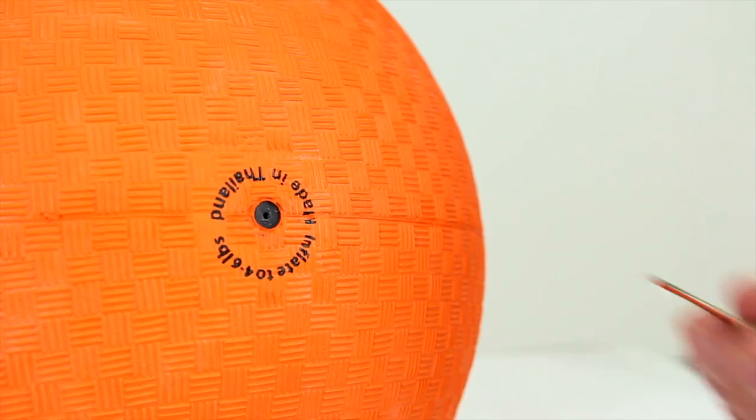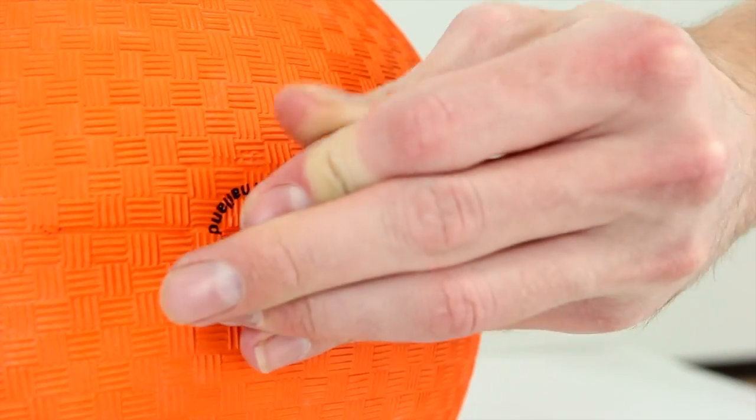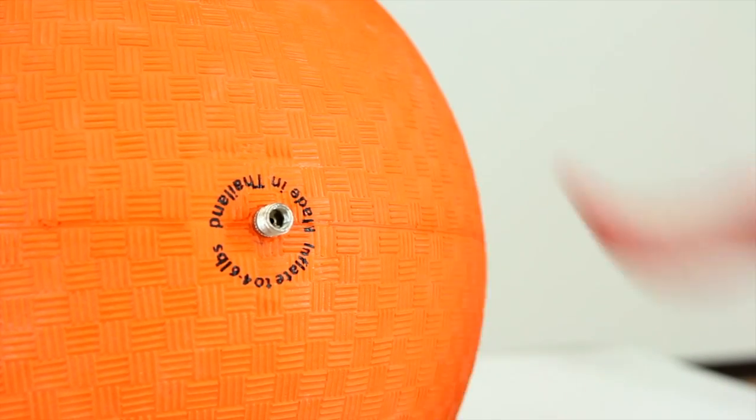To deflate your rubber ball, moisten a standard ball needle and insert it into the valve. You'll hear air escaping. Hold here until desired poundage is reached or until the ball is completely deflated.